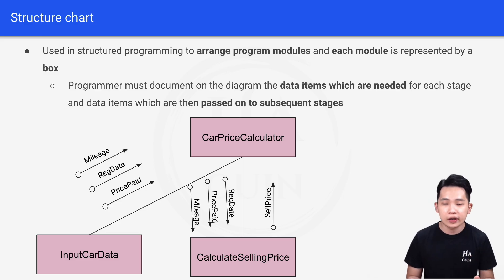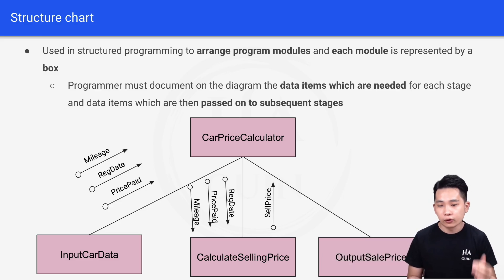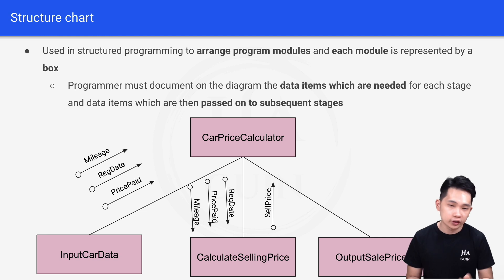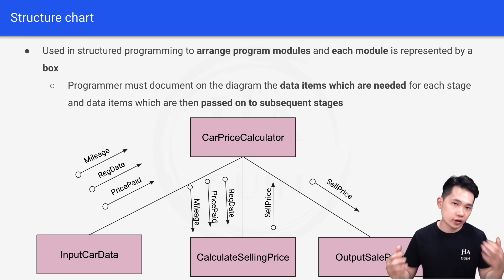The last module will be Output Sales Price. The input for this Output Sales Price module will just be the sell price. And this is how you can construct a structure chart.